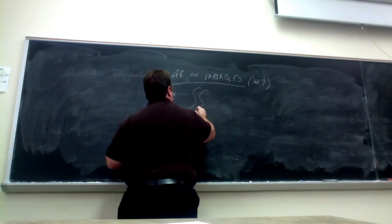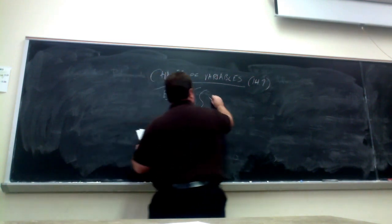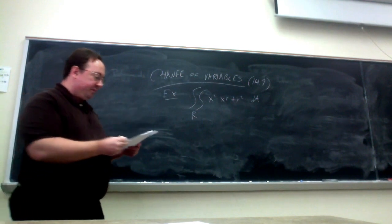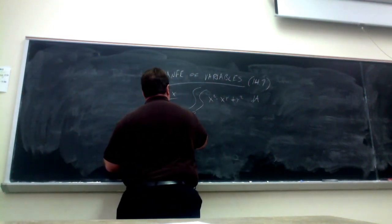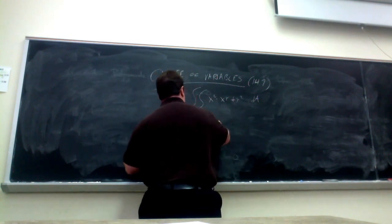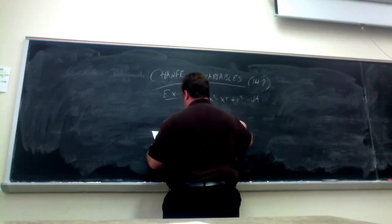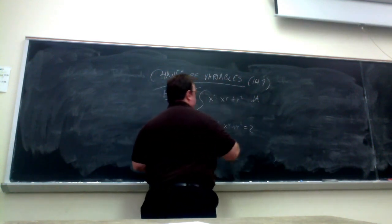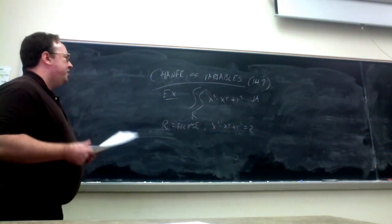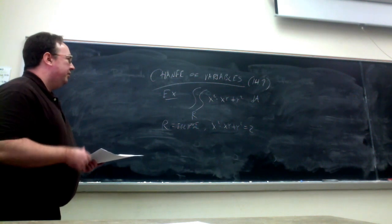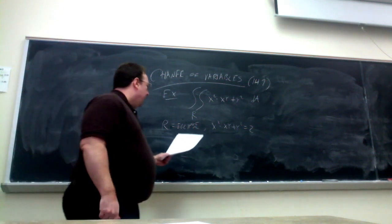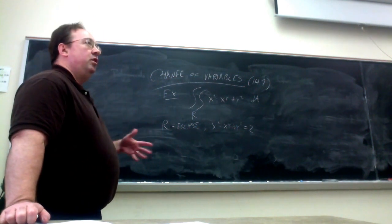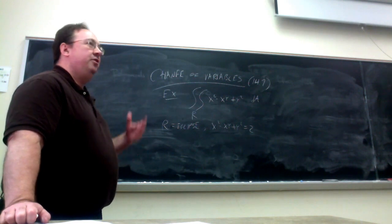The first example is a double integral over some region R, which I'll define in a moment. R is an ellipse, and the equation of the ellipse happens to equal 2. So changing the integrand is going to be trivial, but we still have a Jacobian — mostly we're going to change the variables.